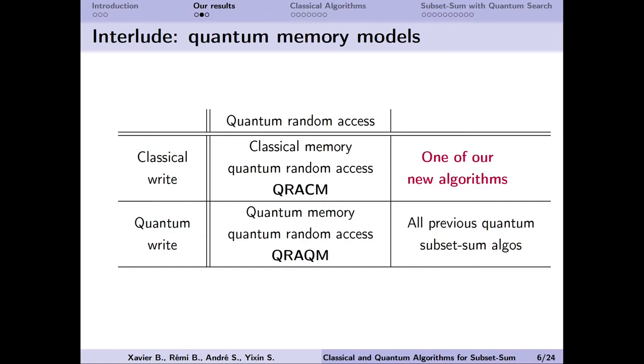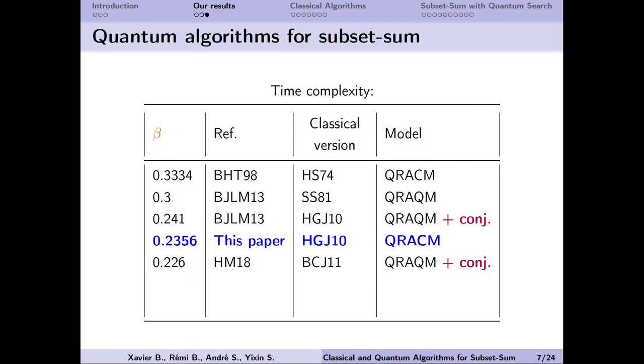All previous subset sum algorithms assumed the stronger memory model, called quantum memory with quantum random access (QRACM), where quantum writes are allowed. But in reality, this model is not yet considered realistic. What is more realistic is the classical memory with quantum random access model (QRACM), where only classical writes are possible. Our first result is an algorithm in this weaker model, that is competitive with the state-of-the-art. Even though they use the stronger memory model, and the conjecture on the quantum walk update step that I will not talk about. So it is reassuring to see that we don't actually need quantum writes.